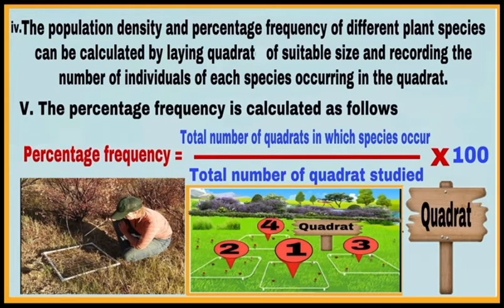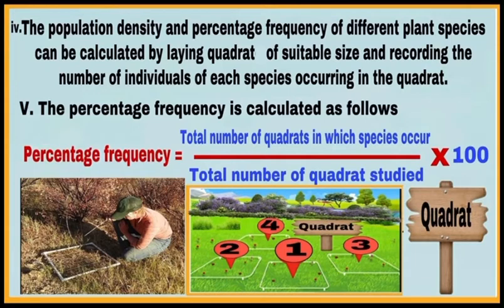In the quadrat method, the number of individuals of each species are counted and recorded. For calculating percentage frequency, the formula used is: percentage frequency = (number of quadrats in which species occurs / total number of quadrats studied) × 100.